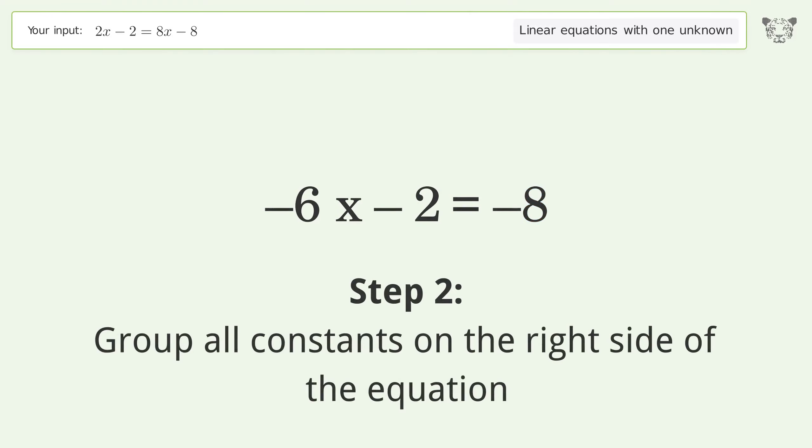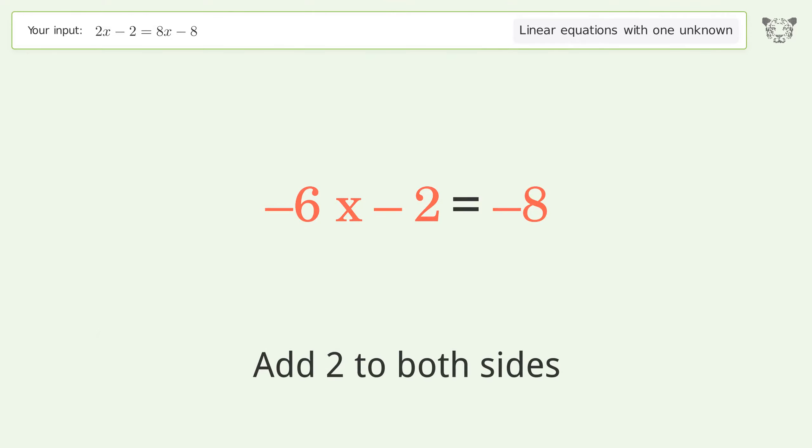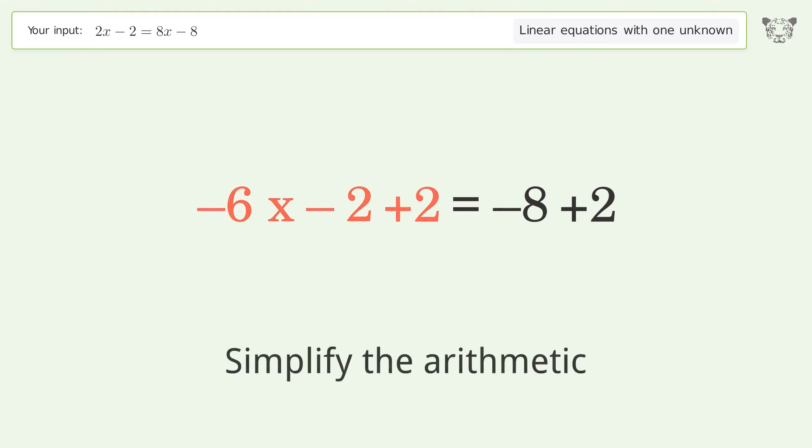Group all constants on the right side of the equation. Add 2 to both sides. Simplify the arithmetic.